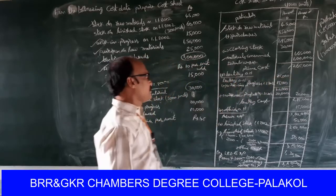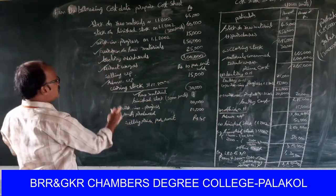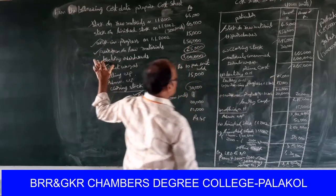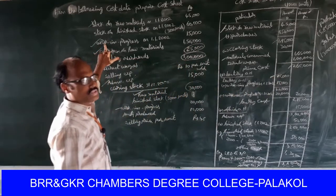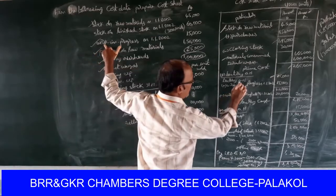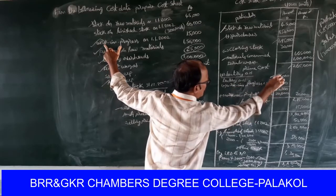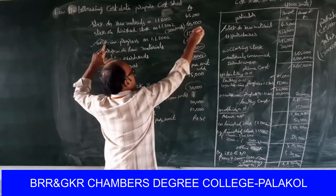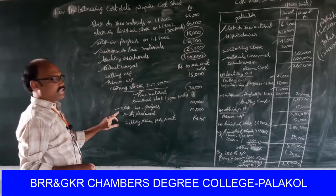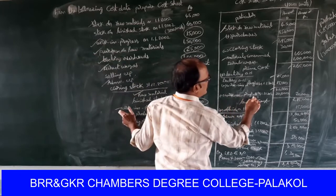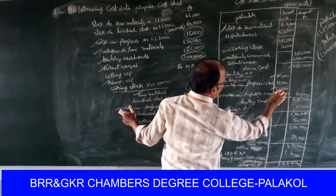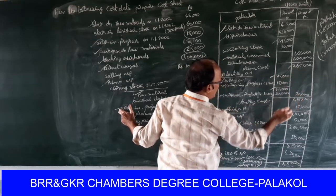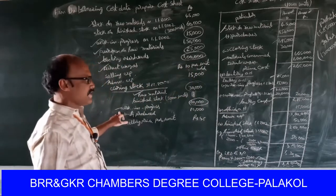Factory overheads twenty-five thousand. Opening stock of work in progress as on 1/1/2002: fifteen thousand. Twenty-five thousand plus fifteen thousand equals forty thousand. Less closing stock of work in progress as on 31/12/2002: twenty thousand. Forty thousand minus twenty thousand equals twenty thousand. Two lakh sixty-five thousand plus twenty thousand equals two lakh eighty-five thousand, distributed as factory cost.